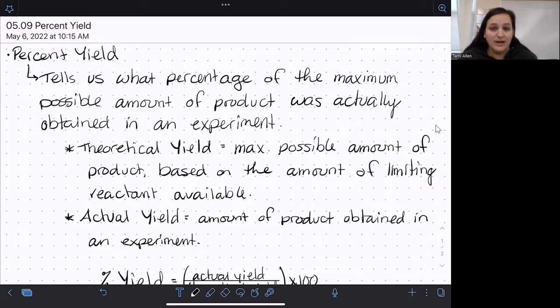So essentially the theoretical yield is what we have been calculating for the last couple videos. We just haven't thrown unnecessary vocabulary at it until now. The actual yield is what you get if you go and actually do the reaction in the lab. So the actual yield is the amount that you get if you do an experiment.